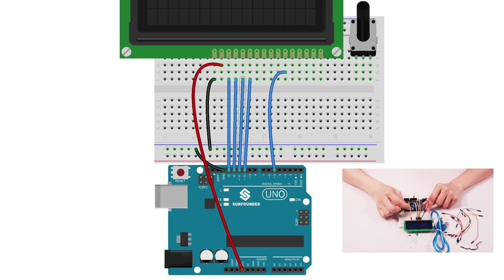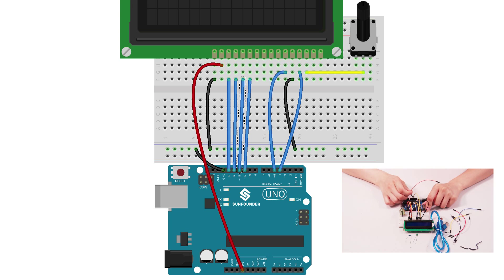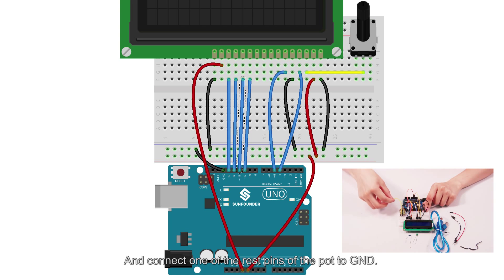E to pin 5. RW to GND and RS to pin 4. Then connect V0 of LCD1602 to the middle pin of the pot. VDD to 5V and VSS to GND and connect one of the rest pins of the pot to GND.